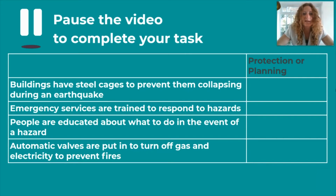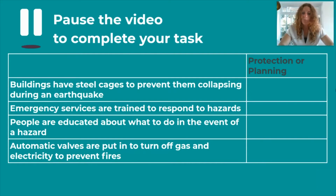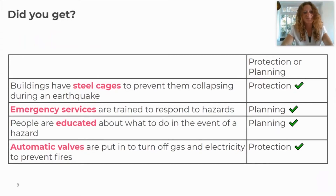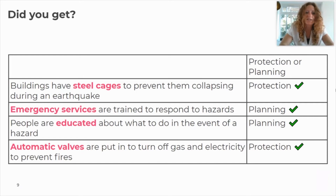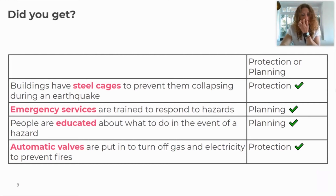Let's check what we've covered. Decide whether each of the following is protection or planning: buildings have steel cages to prevent collapse during an earthquake; emergency services are trained to respond to hazards; people are educated about what to do in a hazard; automatic valves turn off gas and electricity to prevent fires. Answers: steel cages — protection; training emergency services — planning; educating people — planning; automatic valves — protection. Give yourself a tick for each correct one.